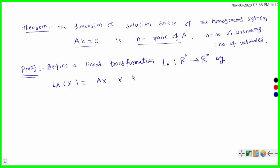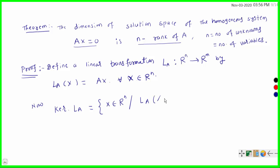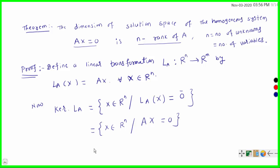Now we calculate the kernel of La or null space of La. Kernel of La is nothing but all x belonging to Rn such that La of x is equal to 0. So this is equal to all x belonging to Rn such that Ax is equal to 0.